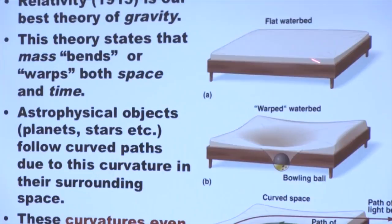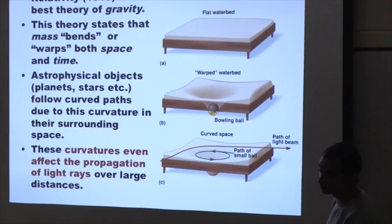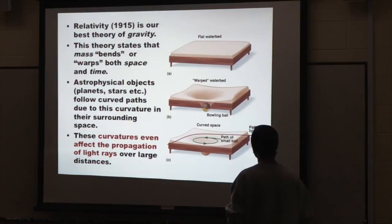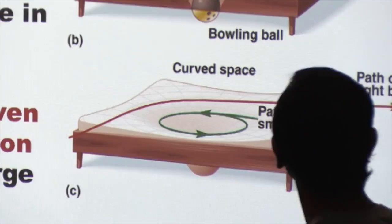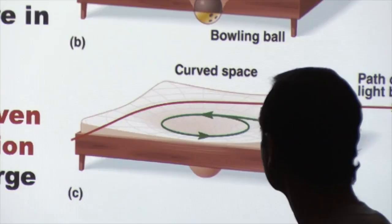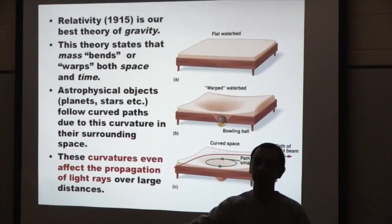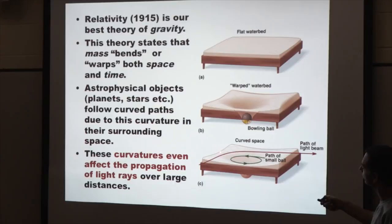If you take a heavy bowling ball and drop it in the middle of that waterbed, it causes a distortion on the surface — a warped waterbed. Now if you take smaller objects like a tennis ball and roll it on the surface, it goes in a curved path and can even go in a circle. The analogy is that if the heavy bowling ball is like the sun, the sun warps space-time around it in a funnel-like shape, and the planets going around it are simply following along this curve in space-time itself — not being pulled by a force of gravity.